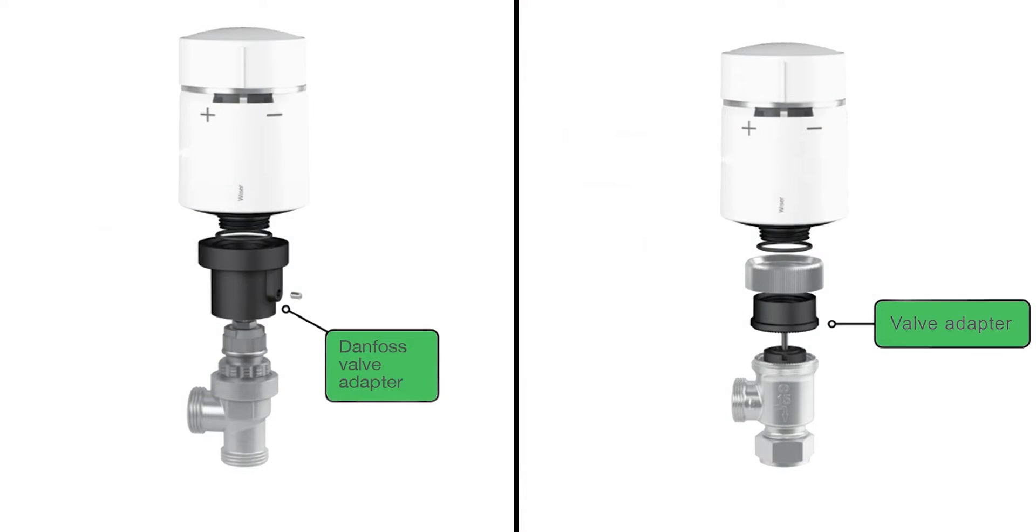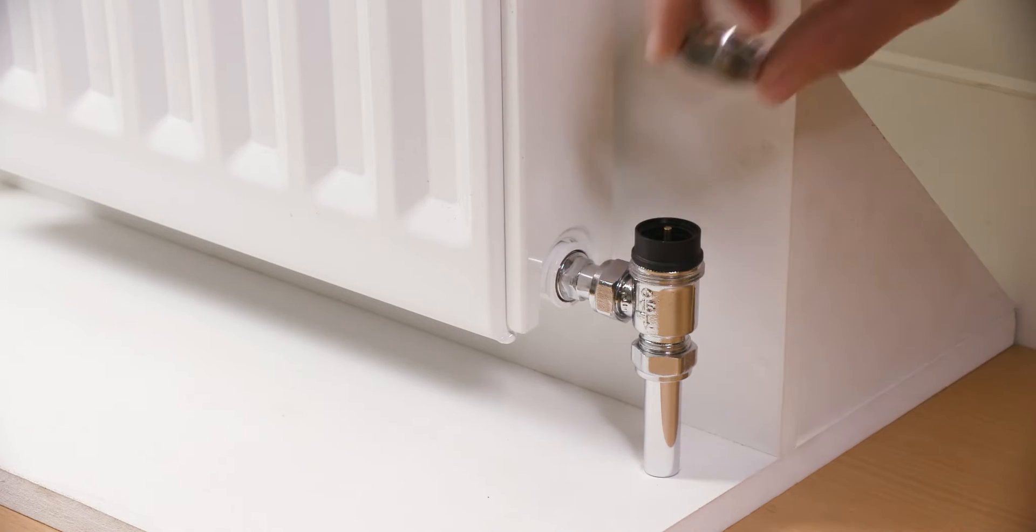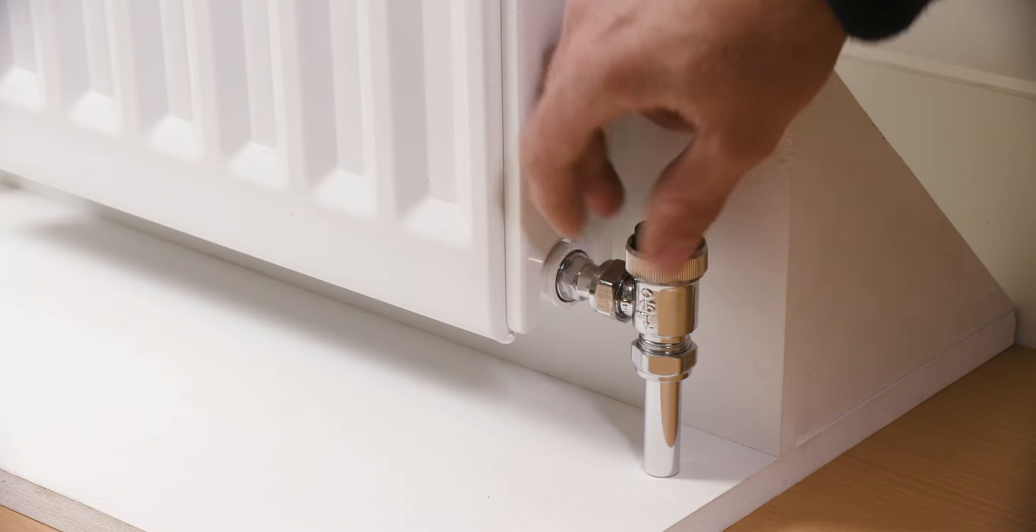Select the right adapter from the Weiser box to fit the existing valve body. Place the black adapter onto the valve body first, followed by the locking ring and hand tighten.